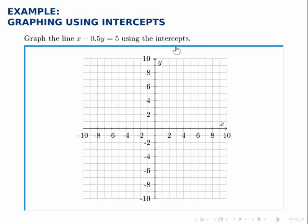In this case we're told to use the intercepts, and the intercepts will be the two points that we use. The intercepts are where the line crosses the y-axis and where it crosses the x-axis. Now what we know is that when it crosses the y-axis, that point will have an x-coordinate of 0, and when it crosses the x-axis, that point will have a y-coordinate of 0.